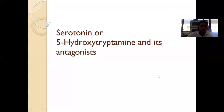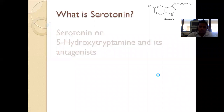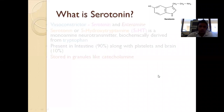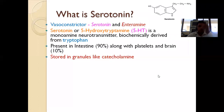Today we will start with the new topic: serotonin, or 5-hydroxy tryptamine, and its antagonists. Serotonin is a vasoconstrictor and is also called interamine. It has a structure with a catechol ring and an amine functional group.